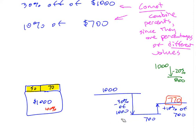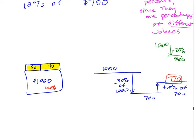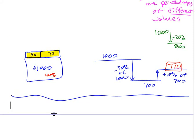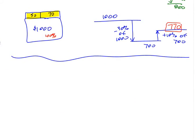They're percentages of different numbers. So that's one of the important things to know in this unit: when can you combine percentages and when can't you? The tax goes to the government — so that's another reason you can't combine them, because they're going to different places.